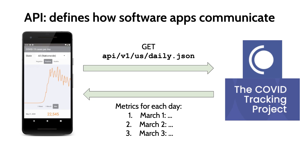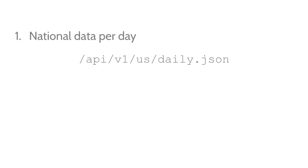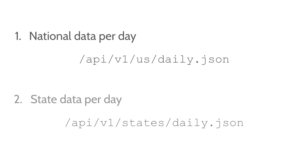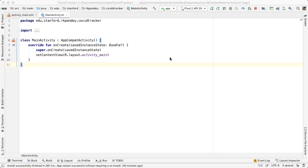In addition to getting the data nationally, we'd also like to be able to get the per-state data for coronavirus. In order to do that, there's one more endpoint in the API that we'll need to hit, and that will give us back a list of the data per day per state.